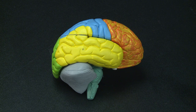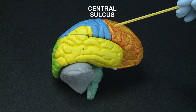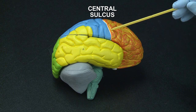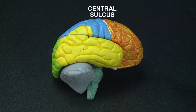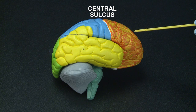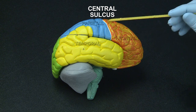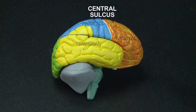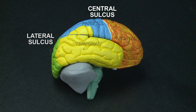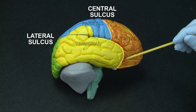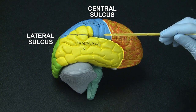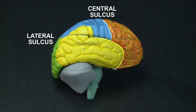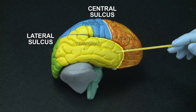In this model, I will point to two major sulci in the cerebral hemispheres. The central sulcus divides the frontal from the parietal lobe, and the lateral sulcus divides the frontal from the temporal lobe.